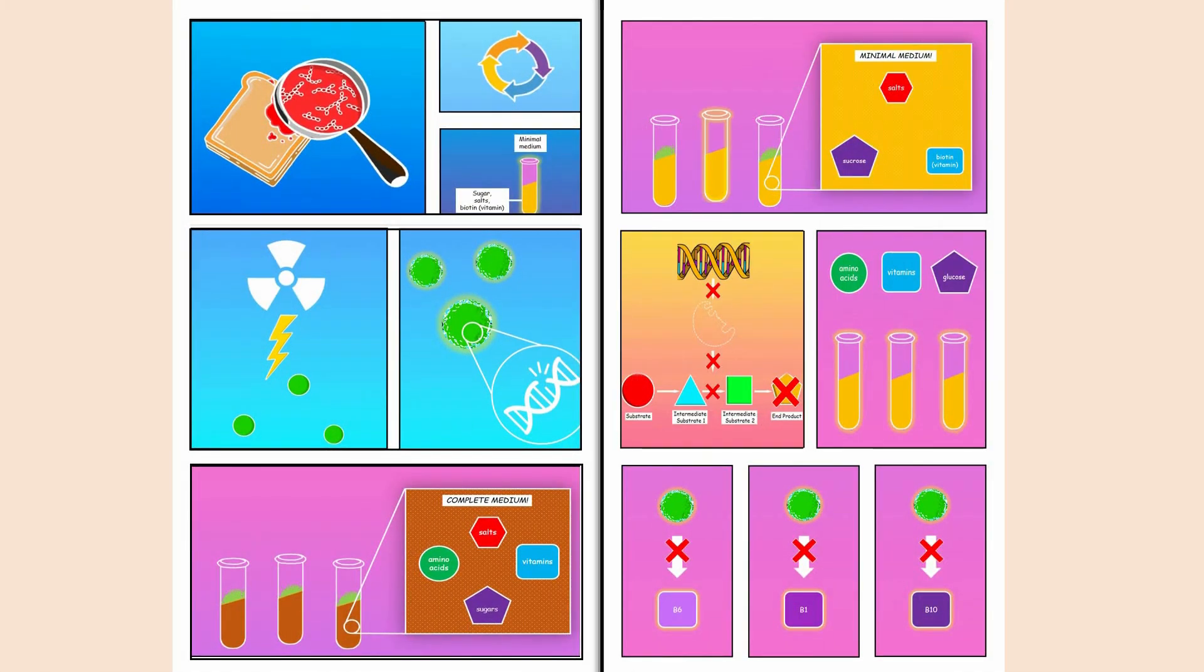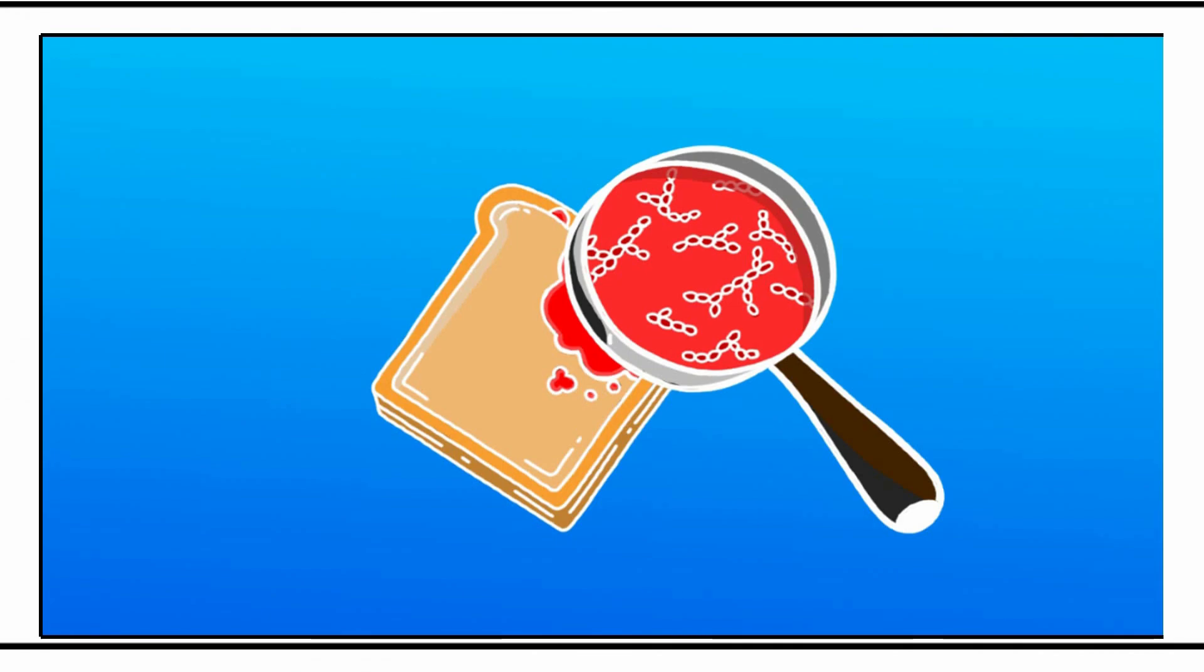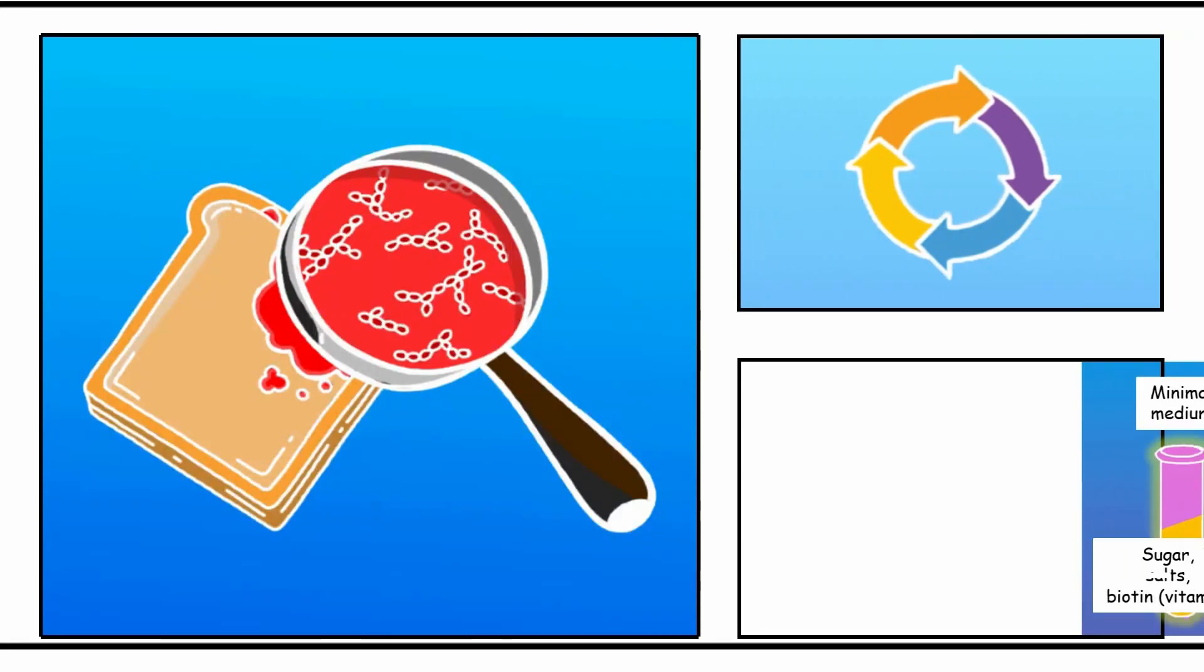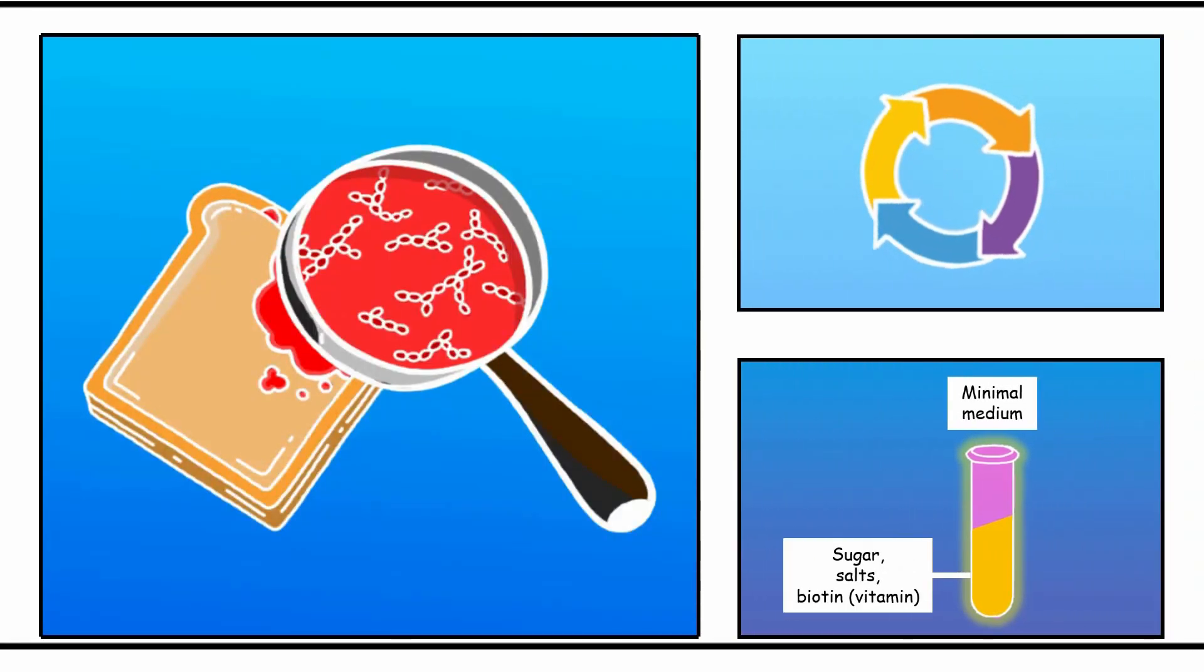After searching far and wide for their lead character, Beadle and Tatum found bread mould, or Neurospora crassa. Not only does it have a short life cycle, but it is prototrophic, meaning it can grow on a minimal medium which lacks most nutrients.